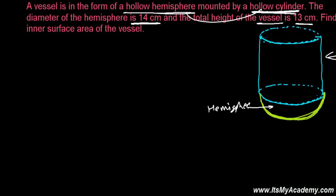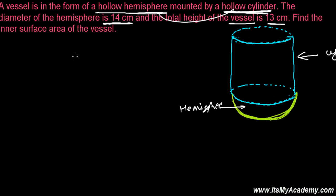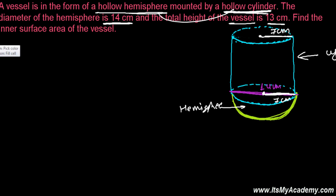Let me write all the given values. The diameter of the hemisphere is 14 centimeters, so the radius will be 7 centimeters. Since the cylinder is completely mounted over the hemisphere, the radius of the cylinder is also 7 centimeters. So both the hemisphere and the cylinder share a radius of 7 centimeters.